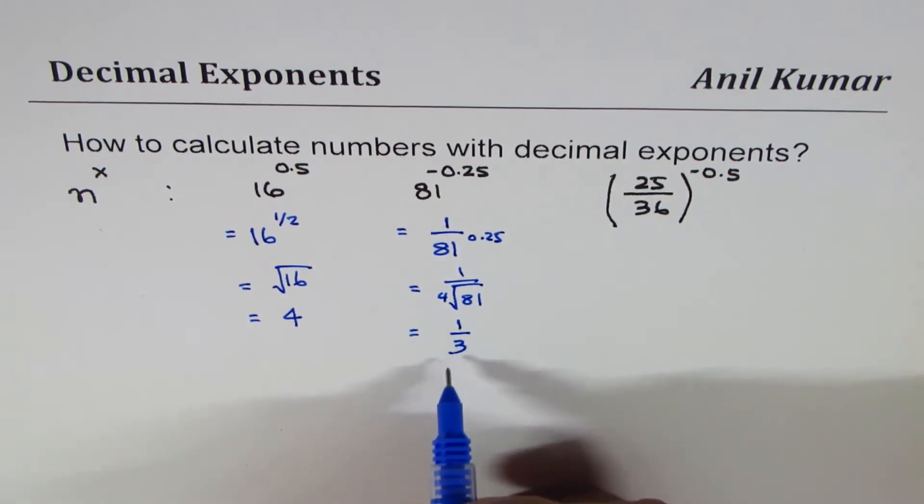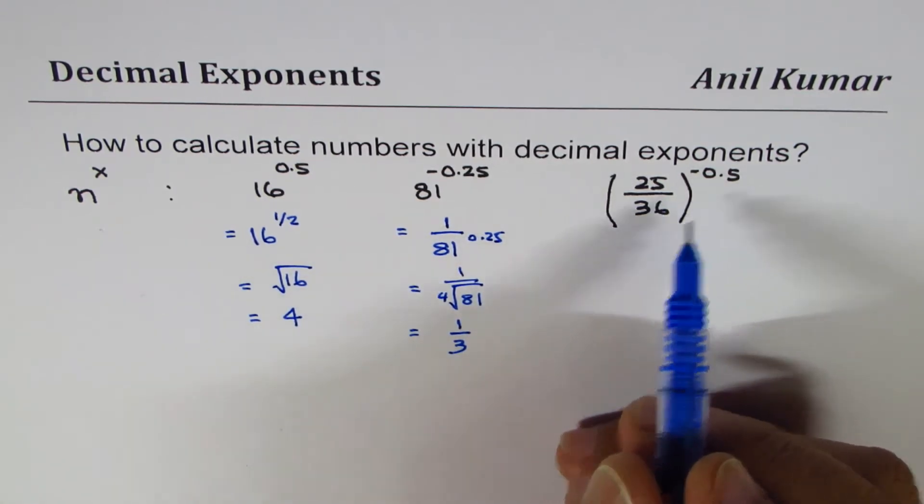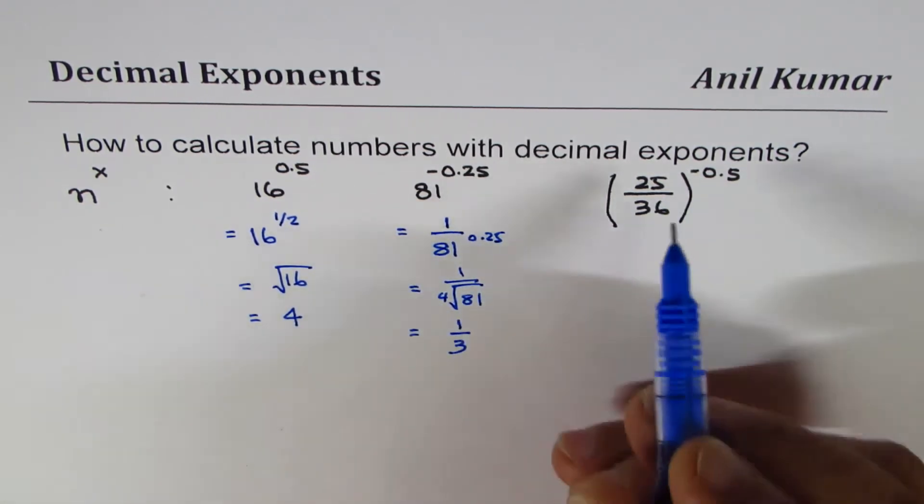The fourth root of 81: square root is 9, and square root of 9 is 3, so it equals 1 over 3.